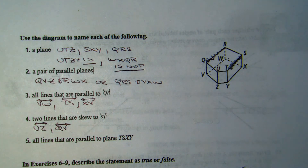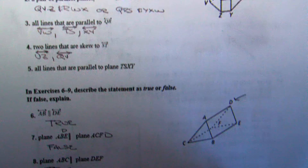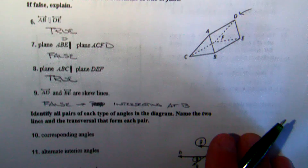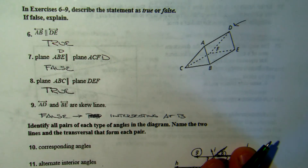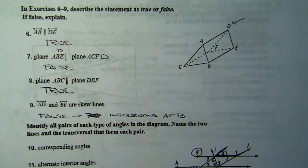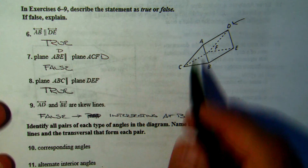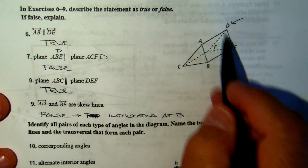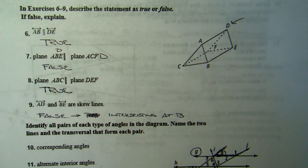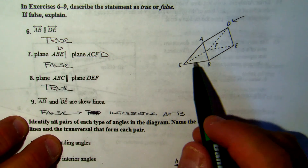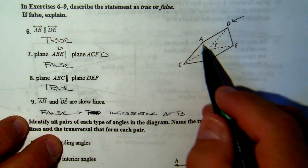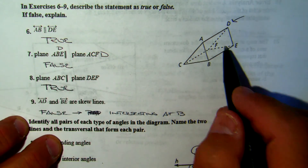Now exercises six through nine — describe the statement as true or false. AB is parallel to DE: AB and DE are co-planar and they do not intersect, so therefore they are parallel. Plane ABE and plane ACF: AB is on the right, ACF is on the left.